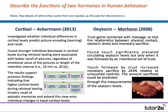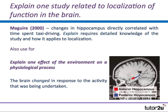Moving to the third section and perhaps the most challenging: explain one study related to localisation of function in the brain. This is a short answer question. The study I usually choose is Maguire because Maguire can be used for this question and also for a question on plasticity — specifically, explain one effect of the environment on a physiological process, because the brain changed in response to the learning activity being undertaken.